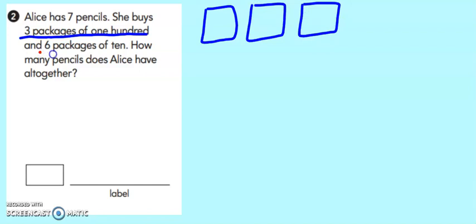And it says she has six packages of 10s. So I'm going to draw six 10s. And you might say, well, she doesn't have any ones. But if you remember the very first sentence, it says she has seven pencils. Those are just seven random pencils that are not in a package. So that would be our ones.